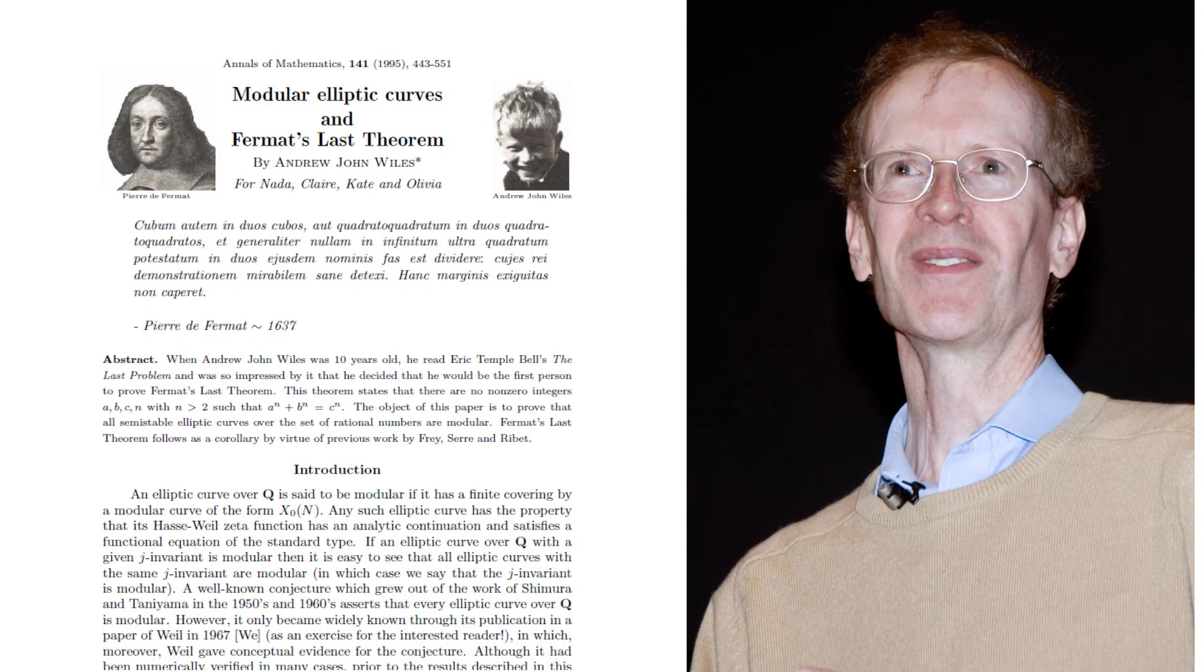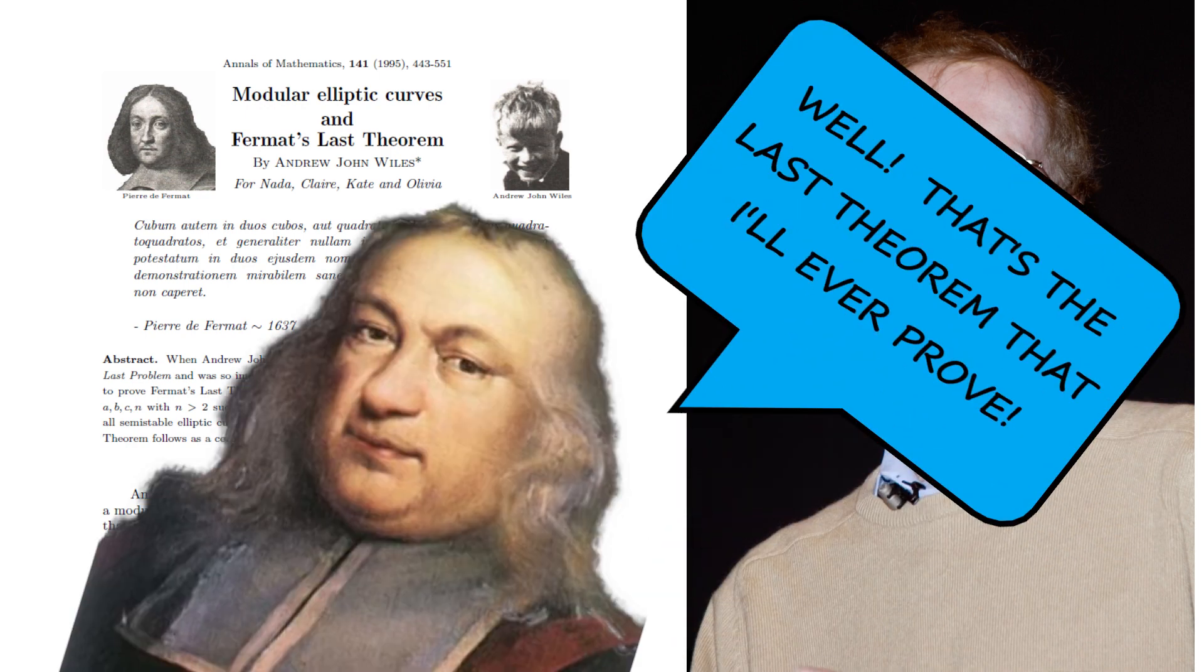The complication of Wiles' proof, which is over 100 pages long, and the centuries that it took for a correct proof to be found has led many mathematicians to think that Fermat probably didn't actually have a correct proof after all.